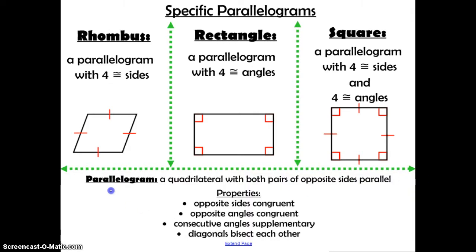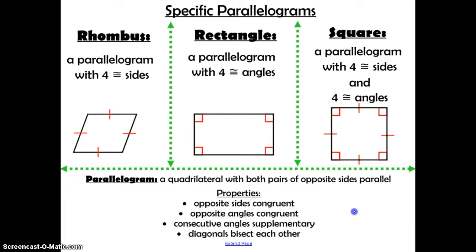As a reminder, the definition of a parallelogram is a quadrilateral with both pairs of opposite sides parallel. The special properties are that opposite sides are congruent, opposite angles are congruent, consecutive angles are supplementary, and the diagonals bisect each other. That means all five of these things are true for each of the rhombus, rectangle, and square.